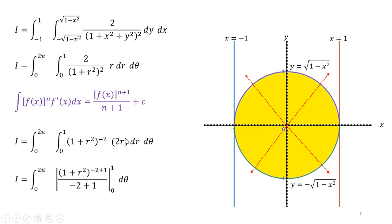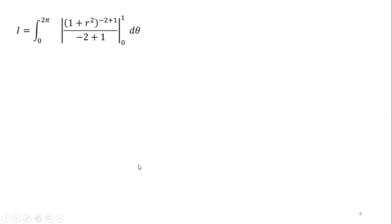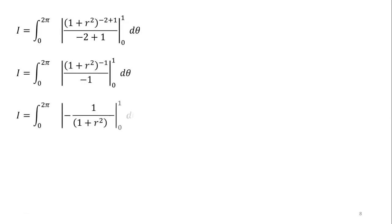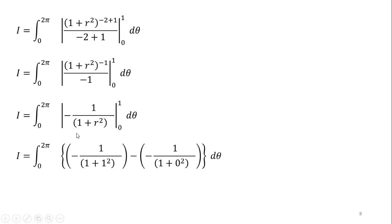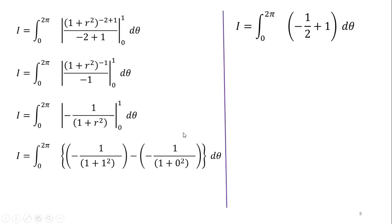So the integration gives one plus r squared to the power of minus two plus one, over minus two plus one, evaluated from zero to one. Evaluating these terms and simplifying, we shift the numerator to the denominator to make it positive one, and bring the minus sign outside. Applying the limits — upper minus lower — and simplifying, we get minus one half plus one, which equals one half. Taking one half outside, the integration of d theta is theta, applying limits zero to two pi gives the final simplified answer.